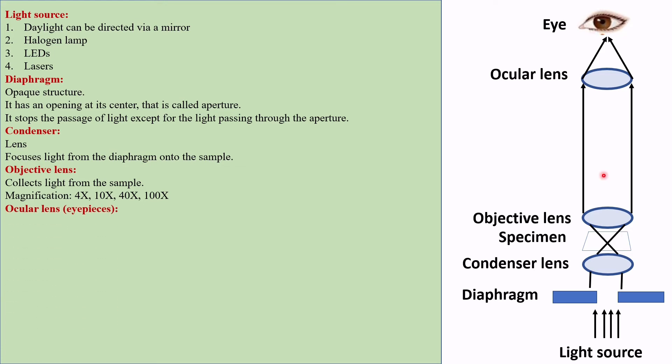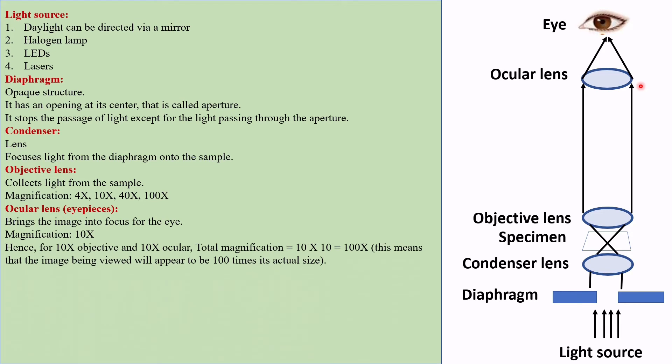Ocular lens or eyepiece brings the image into focus for the eye. Its magnification is 10x. Hence for 10x objective and 10x ocular, total magnification is 10 times 10 equals 100x. This means that the image being viewed will appear to be 100 times its actual size.